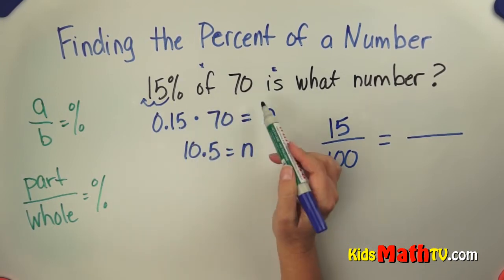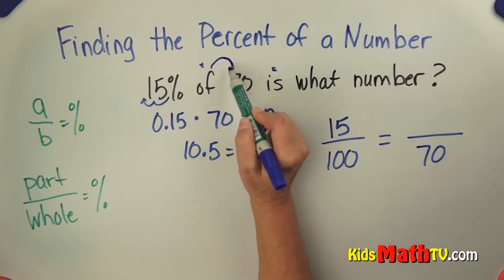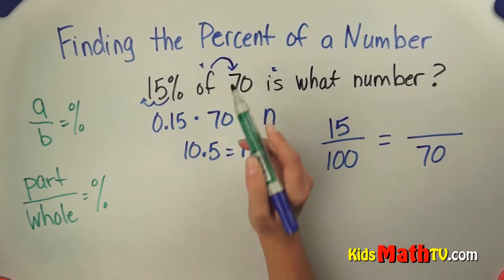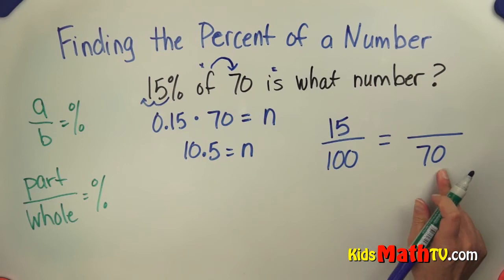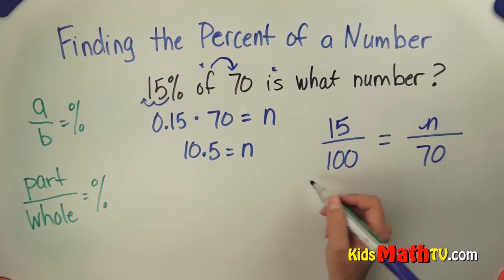70 is the total number of questions on the test, and a good way to know if it's the part of the whole is the of tells you that the whole is coming up. That's the whole. And what we're doing is we're finding the part. So now we'll use cross products.